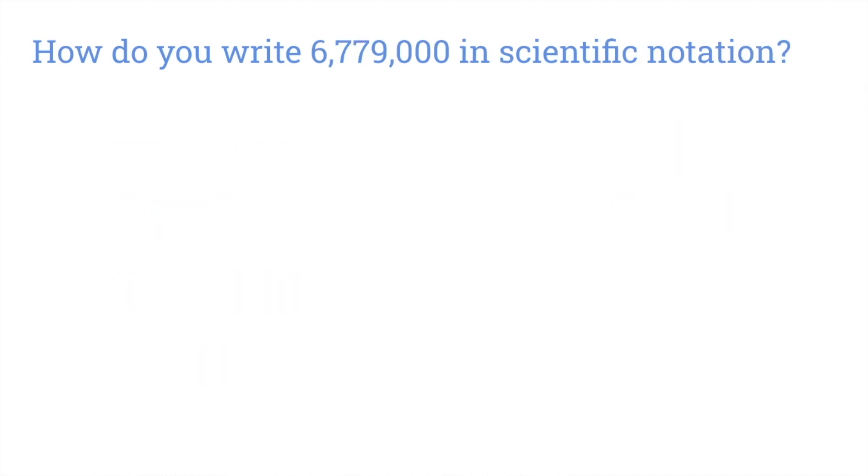Let's look at one last problem. How do you write the diameter of Mars, 6,779,000 meters, in scientific notation? Let's start by moving the decimal point to the left until we see a number between 1 and 10. 6.779 is between 1 and 10, so let's leave the decimal here, between 6 and 7. Now count how many places the decimal moved. The decimal moved 6 places, so 6 is the power of 10 in this example. Now we know that 6.779 times 10 to the power of 6 is 6,779,000 written in scientific notation.